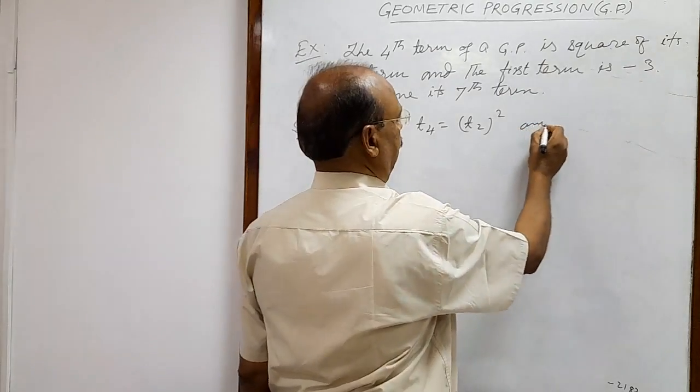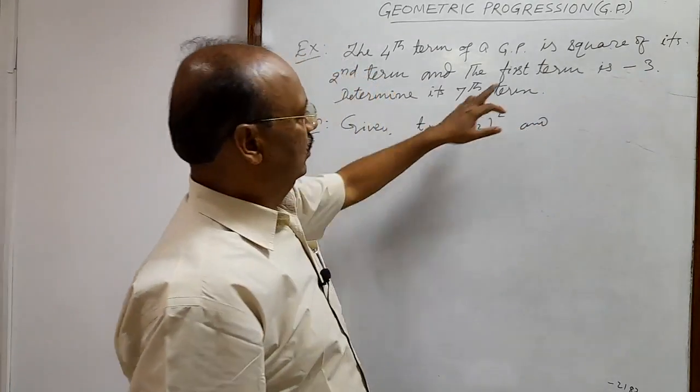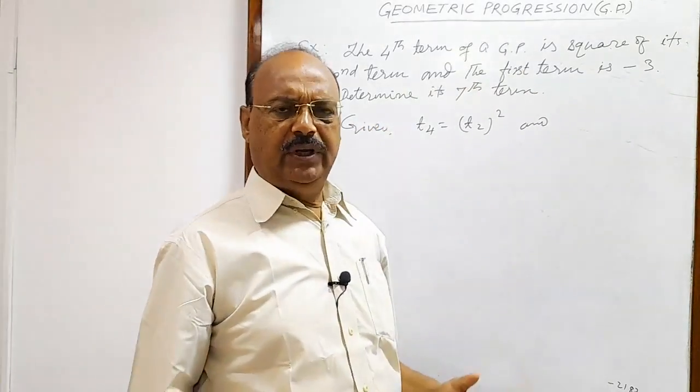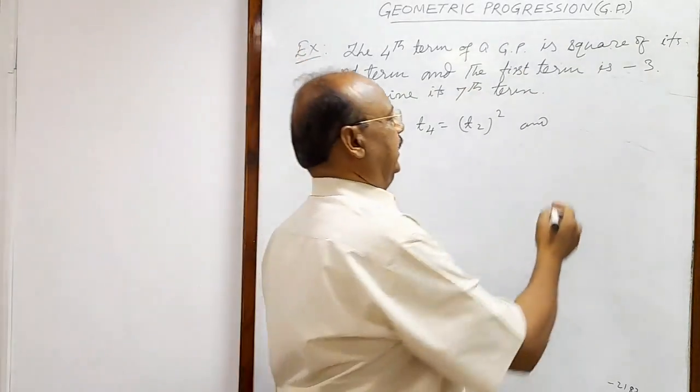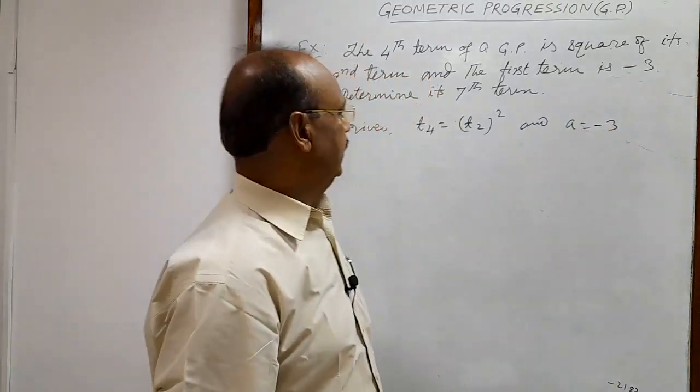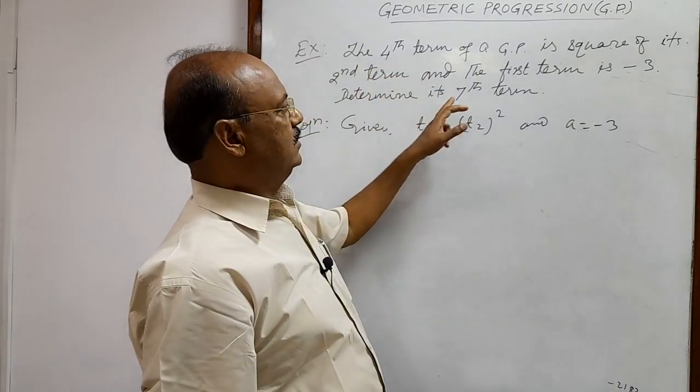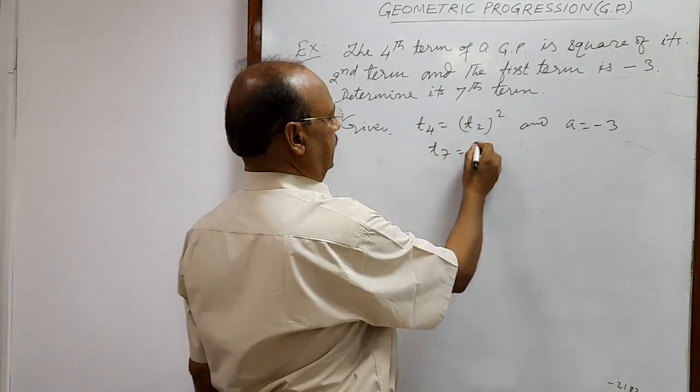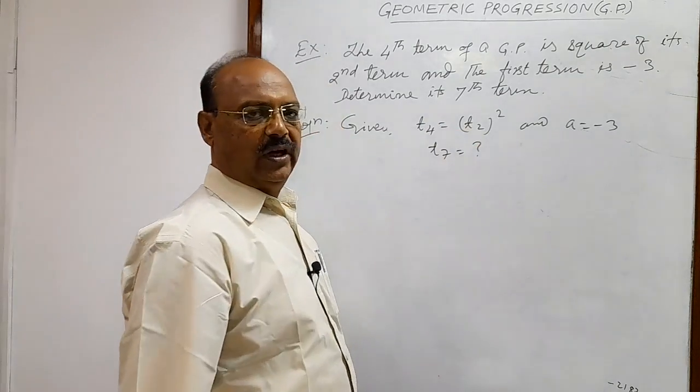And also given, first term is minus 3. First term in a GP is generally denoted by A. So A is equal to minus 3. We have to find out T7.